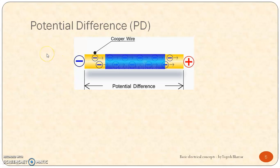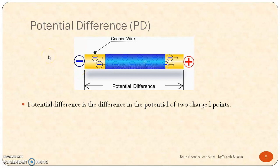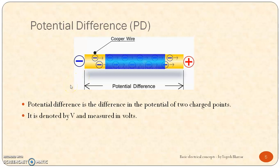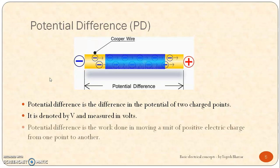Then what is potential difference? Here we can see there are two points — one is a positive point and another is the negative. The potential difference is simply the difference between the potential of two charge points. It is denoted by V and measured in volts. It is similar to the EMF. Potential difference is the work done in moving a unit of positive electric charge from one point to another point.